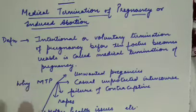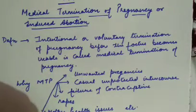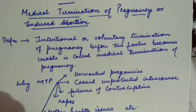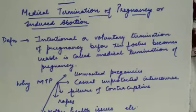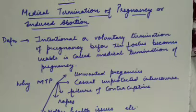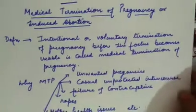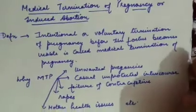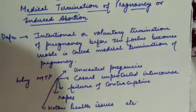Sometimes the contraceptives we studied in our earlier lecture — temporary and permanent methods for contraception — are not always 100% efficient. Sometimes they may fail. In that case, MTP is also used if fertilization has occurred and pregnancy is conceived.